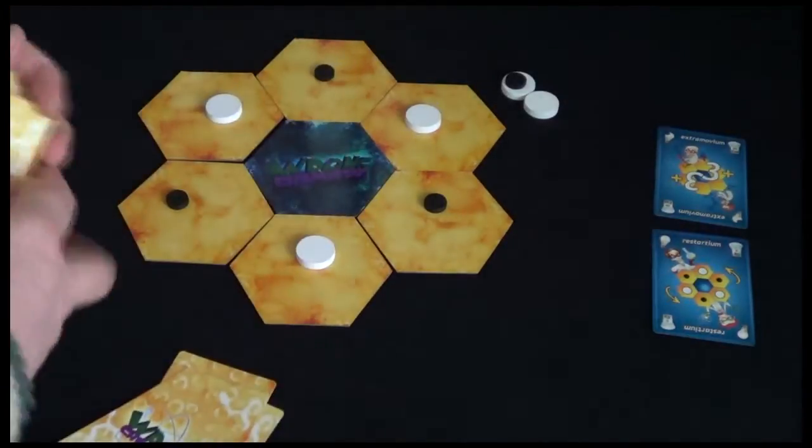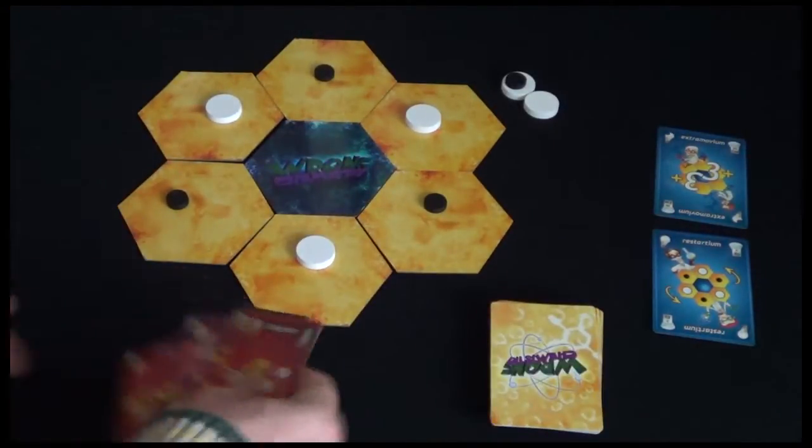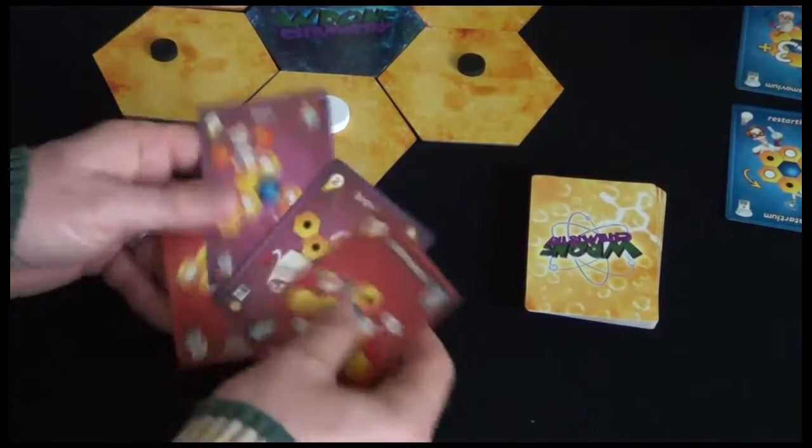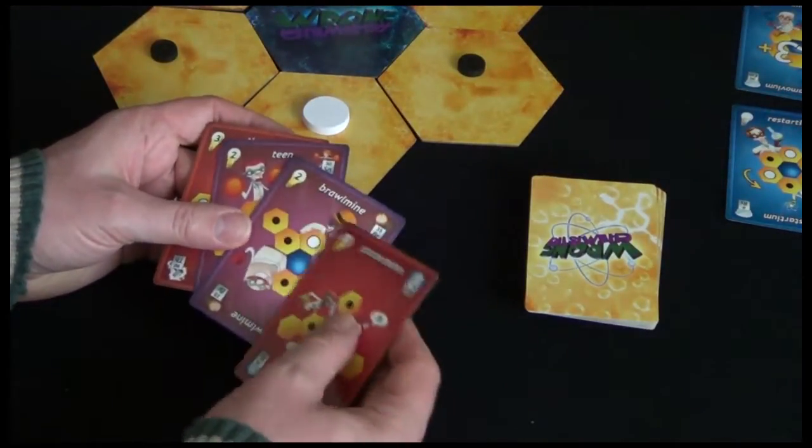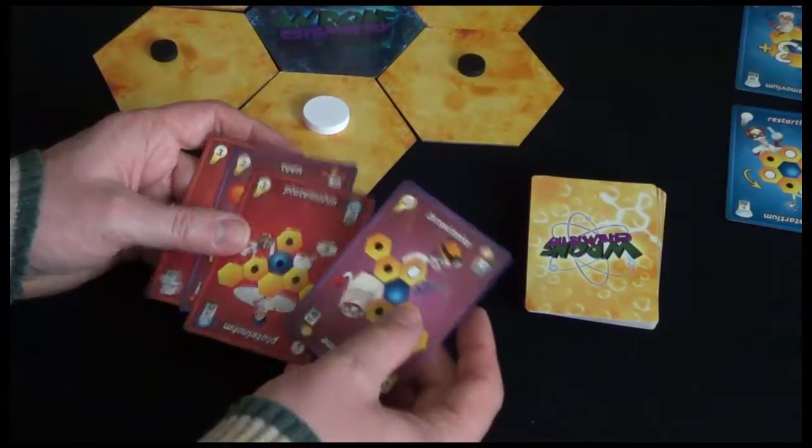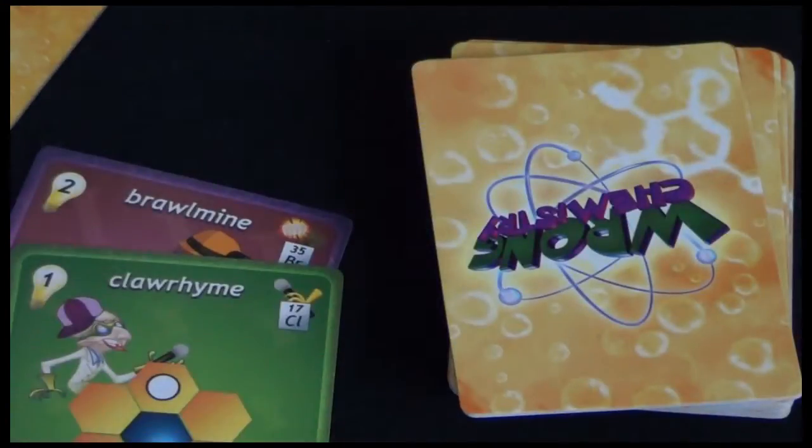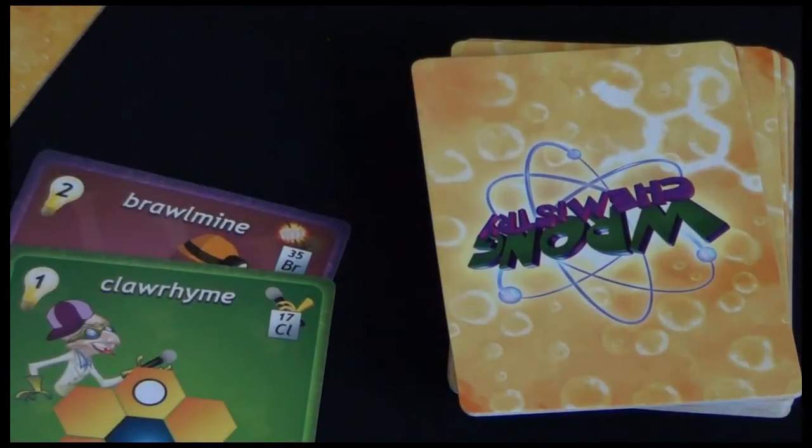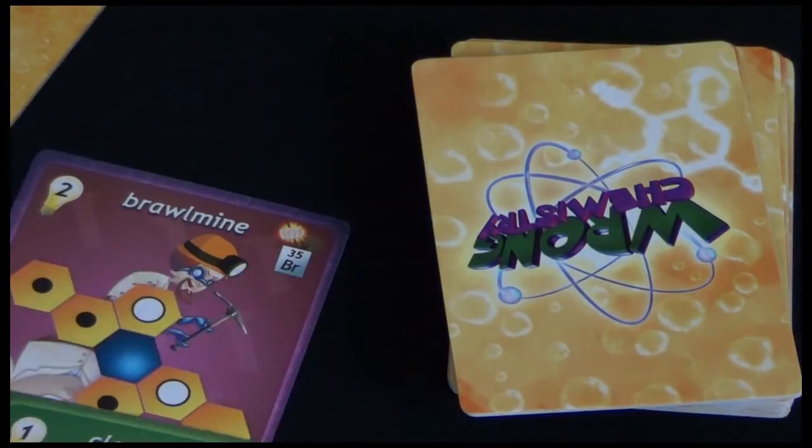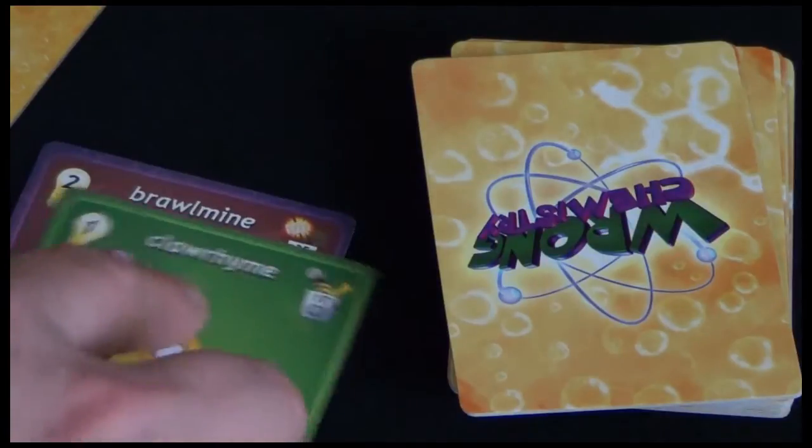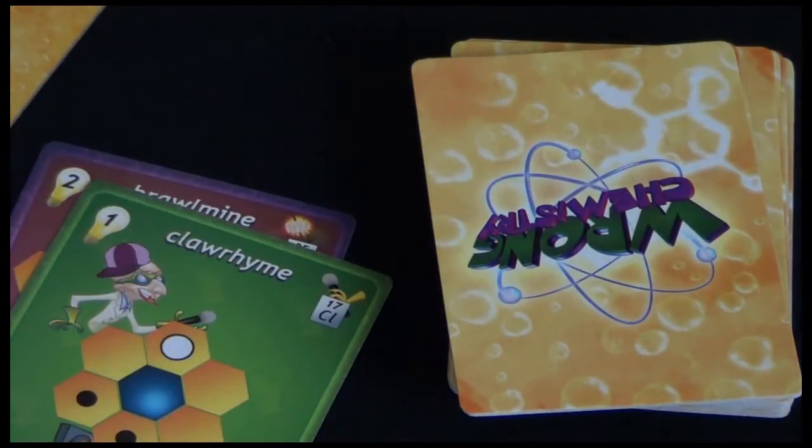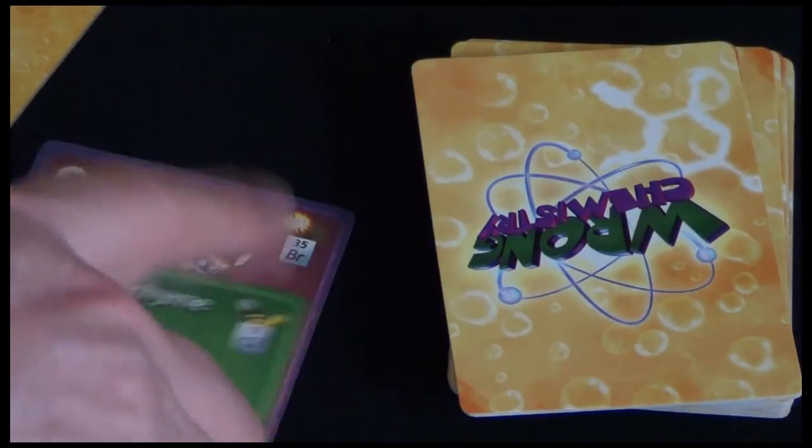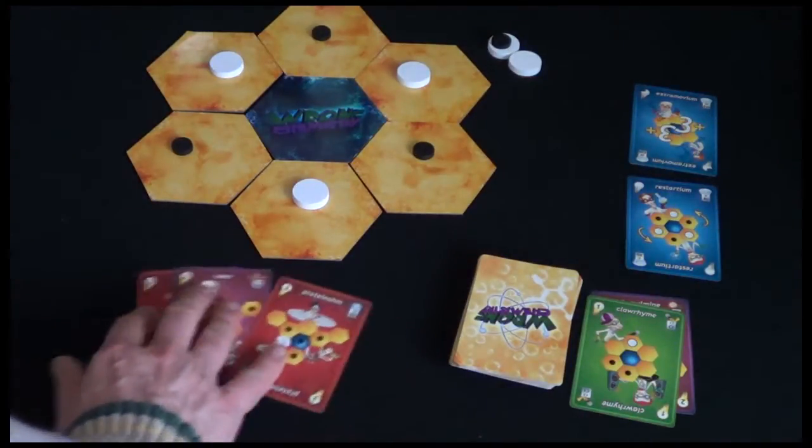Each player starts the game with four cards. To determine the first player, each player chooses a card from their hand. Let's say I choose this one here. Another player chooses this one. The player with the lowest number here. This is like the reference number for the periodic table of these make-believe elements. This one's called Brawl Mine. This one's called Chlorime. They've kind of made up these little element names. Whoever has the lowest number here gets to go first. Then you just discard these into a discard pile and draw back up to four cards.